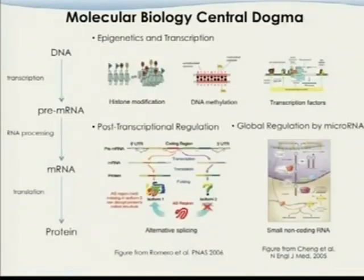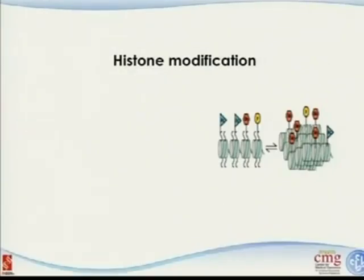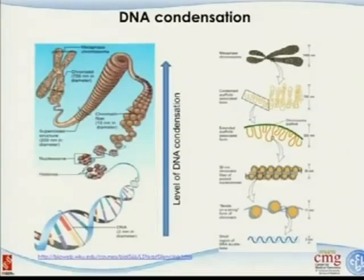Let's come back and continue to talk about epigenetic regulation. Coming back to the central dogma of molecular biology: we've got DNA, transcription produces RNA, then RNA processing and translation produce protein. The epigenetic part occurs from DNA to RNA — it controls and affects transcription regulation. The two major forms of epigenetics are histone modification and DNA methylation.